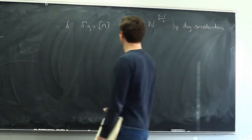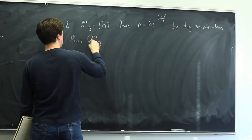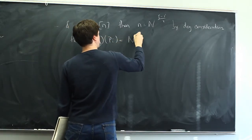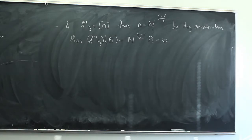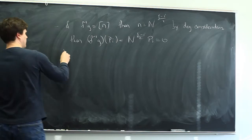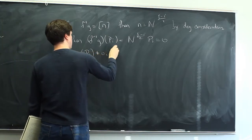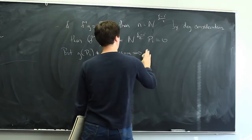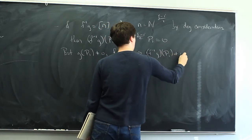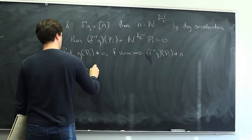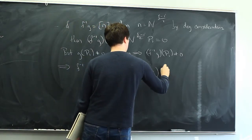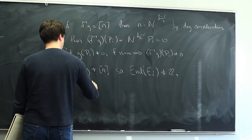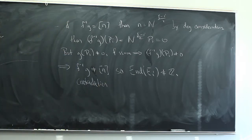If F^{-1}∘G were multiplication by some integer m, then m^2 = n^{j−i} by degree considerations, so m is a power of n. Then F^{-1}∘G applied to P_i would be m·P_i = 0 since P_i is n-torsion. But G doesn't kill P_i, and F is an isomorphism — contradiction. So F^{-1}∘G is not multiplication by an integer, meaning the endomorphism ring of E_i is not Z. This contradicts Lemma 2, which means no such E_1 and P_1 can exist.